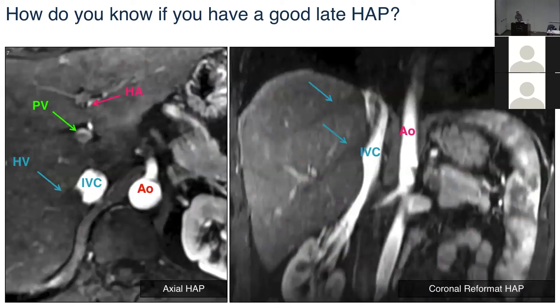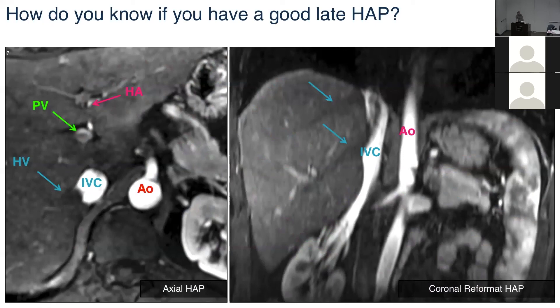Here's an example of a good arterial phase: you see enhancement of the artery and the portal vein, but no enhancement of the hepatic veins. On the coronal reformation, the hepatic veins show no contrast — that's a good arterial phase. If you do see contrast in the IVC, don't be surprised; the kidneys drain into the IVC very quickly. Just don't want to see contrast in the hepatic veins. There may be a flow artifact where unenhanced blood from the hepatic vein enters the IVC, causing a mixing artifact.